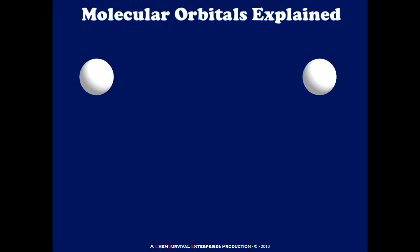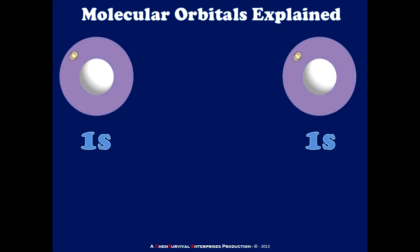I'd like to begin this discussion by considering two individual hydrogen atoms, which are depicted here as white spheres. Now, we already know from our discussions on atomic structure that each of these hydrogen atoms should have a 1s subshell containing a single electron.